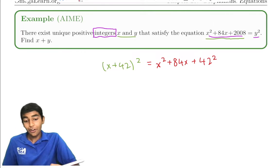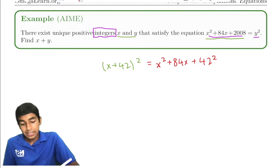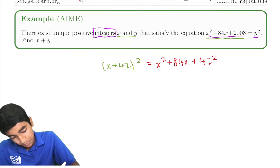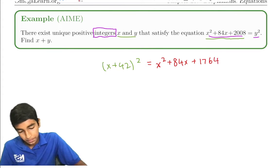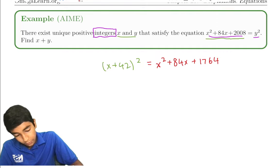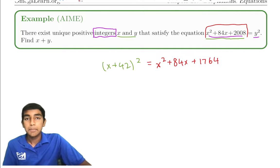(x + 42)² is x² + 84x + 42². And if you watch my squares video, you know that this is just 1764.